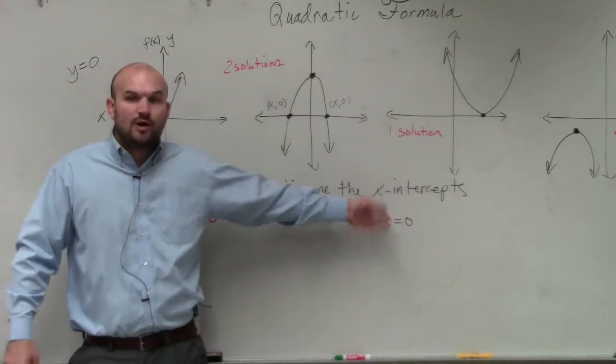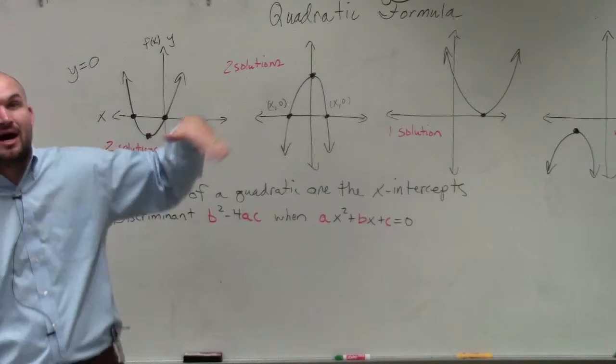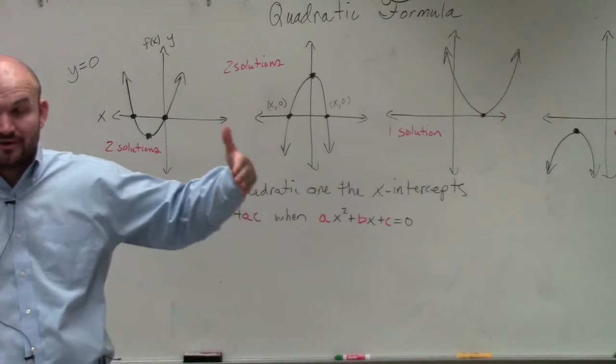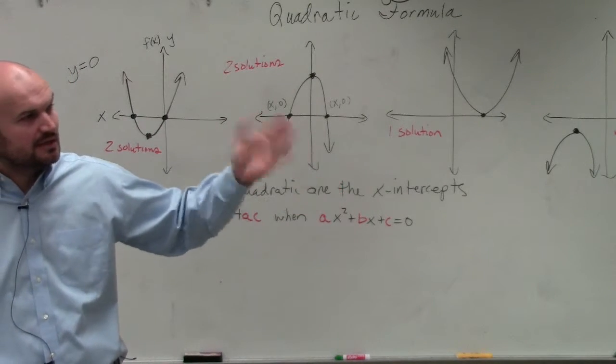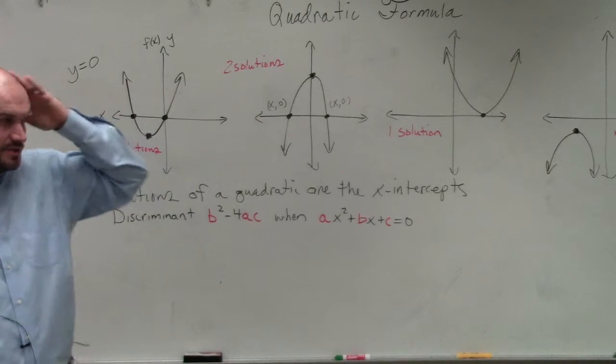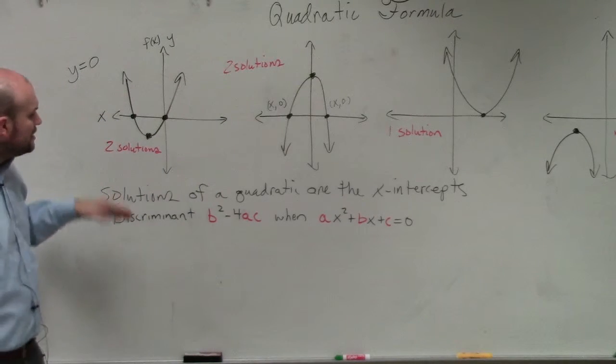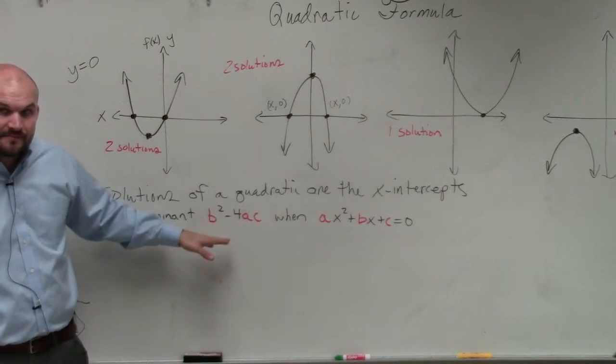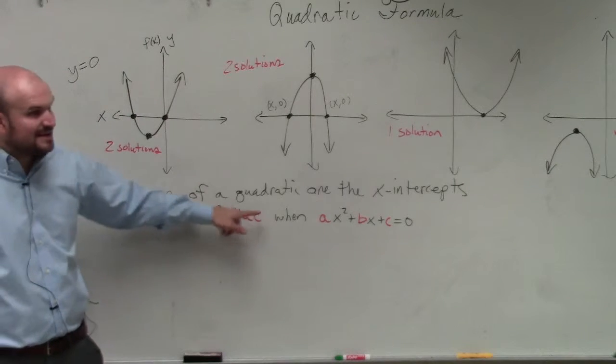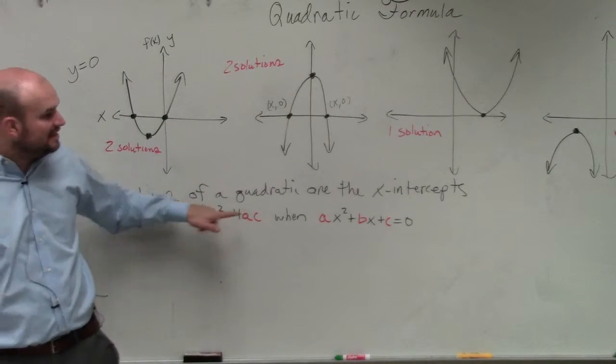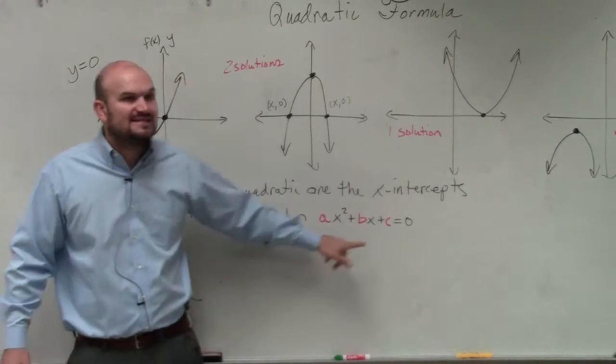If you have it equal to y or equal to f of x, replace the y or replace the f of x with 0. That's how we solve our quadratics, especially when there's two terms, two variables. So to define the discriminant, before we find a, b, and c, notice a, b, and c is only when the quadratic is set equal to 0.